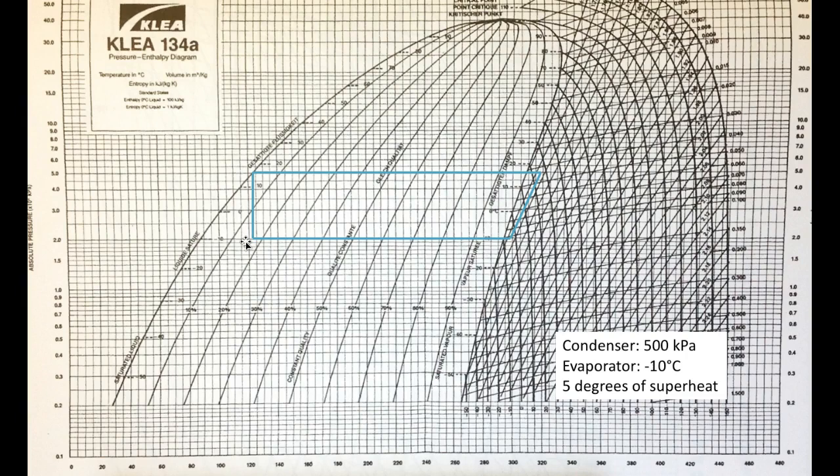As a note, I used PowerPoint to draw this diagram. To get lines perfectly straight, hold down the shift key while drawing — this straightens out your line regardless of how much your mouse wobbles. I recommend doing this especially for the condenser and evaporator lines, since it's very easy to shift a line slightly if your hand wobbles. Holding shift gives you a nice straight line regardless.